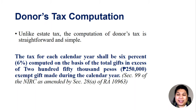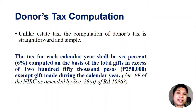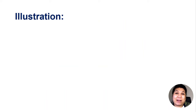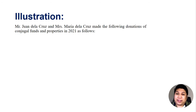The tax for each calendar year shall be 6%, computed on the basis of total gifts in excess of P250,000 exempt gift made during the year. Before subjecting our net gift to 6%, we need to deduct the P250,000 annual exemption limit, according to Section 99 of the NIRC as amended by Section 28A of Republic Act 10963. So let's have an illustration. Mr. Juan de la Cruz and Mrs. Juan de la Cruz made the following donations out of conjugal funds and properties in 2021.